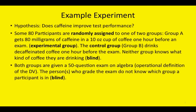Both groups are given a 50-question exam on algebra. That's the operational definition of the dependent variable. The person or persons who grade the exam do not know which group a participant was in, so they are also blind to the conditions.